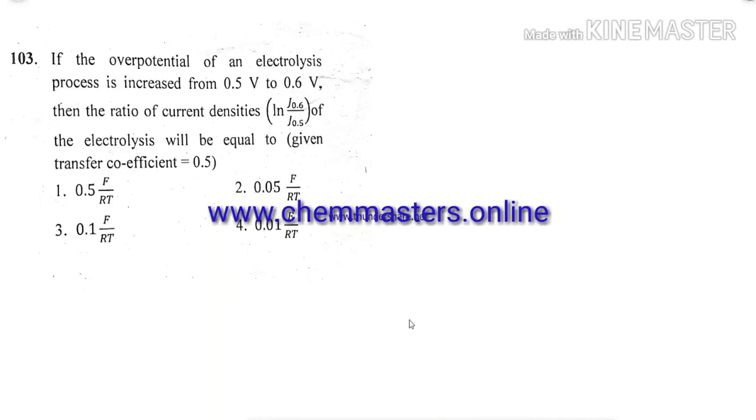Hi guys, here in this video we are analyzing 4C physical chemistry problem of CSIR at June 2019 chemical sciences. Watch the video completely to get conceptual analysis with correct answer of this problem. Just look at the given problem. If the overpotential of an electrolysis process is increased from 0.5 volts to 0.6 volts, then the ratio of current densities J0.6 by J0.5 of the electrolysis will be equal to, here we have given with transfer coefficient 0.5.